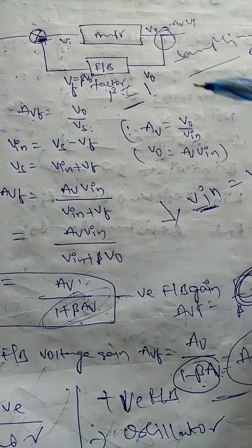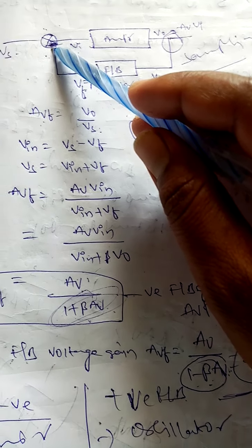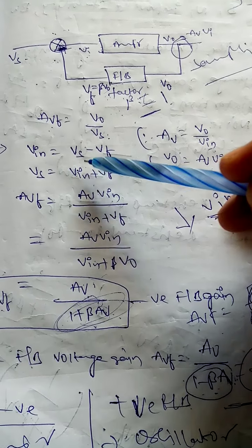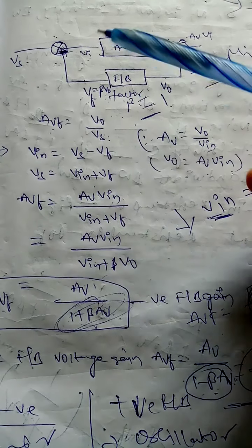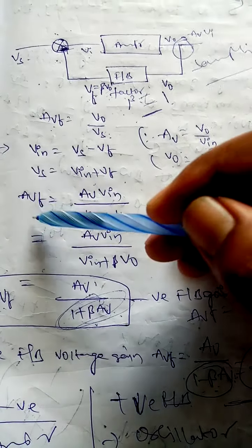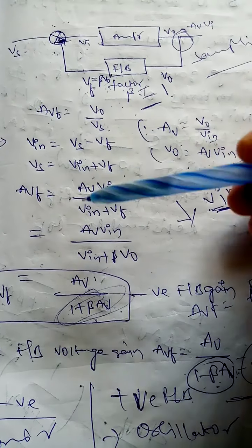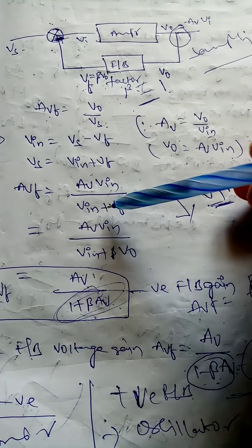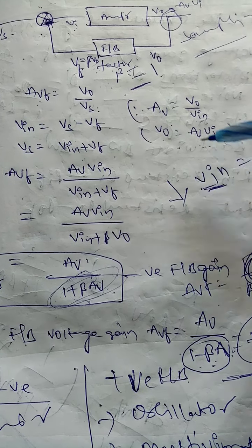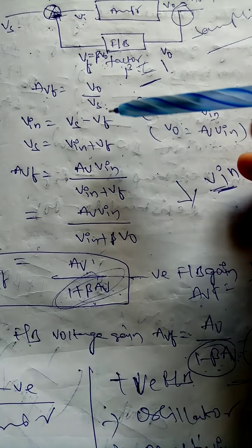For the derivation of the negative feedback amplifier, the mixer point is negative. This is the source signal, and this is the open loop amplifier circuit block diagram. When you connect the feedback path, there is a feedback network. The feedback factor beta determines how much of the output voltage is given back to the input, and its value is typically less than one.